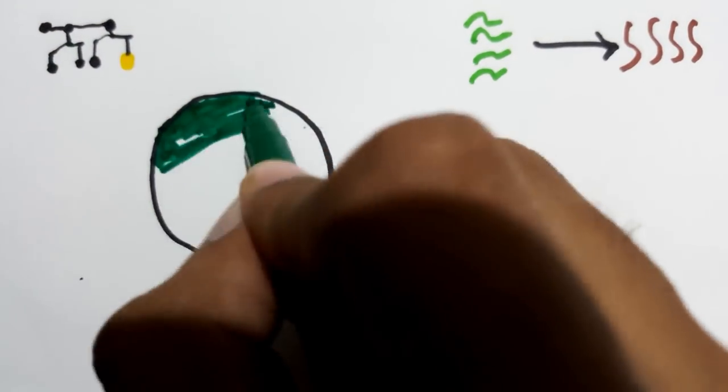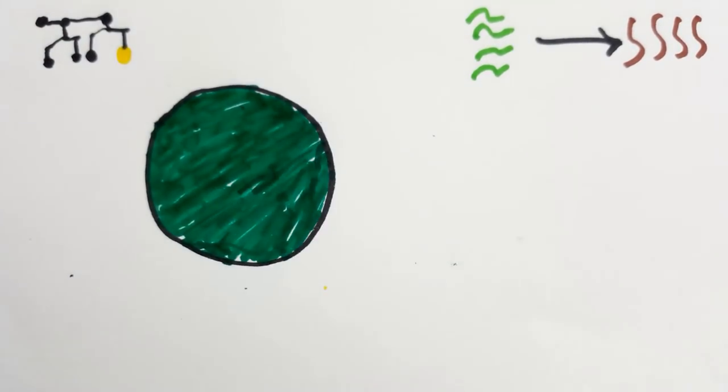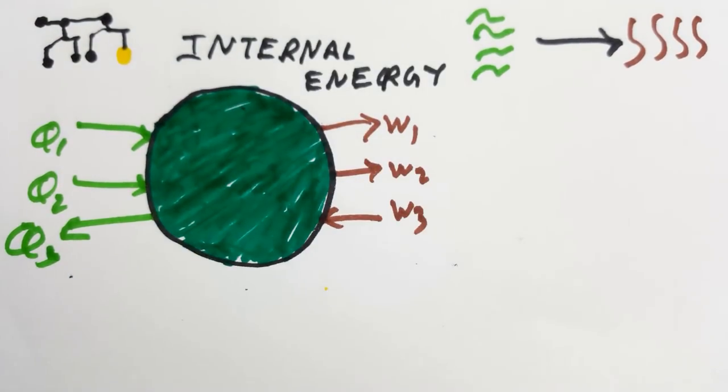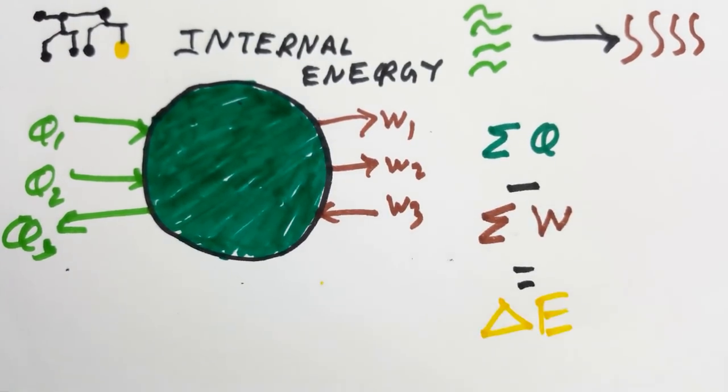First law for a closed system undergoing a change of state: when heat or work is done on a system resulting in change of state, the net energy transfer is stored in the system. This energy termed as internal energy is the difference between the work done and the heat rejected by the system.